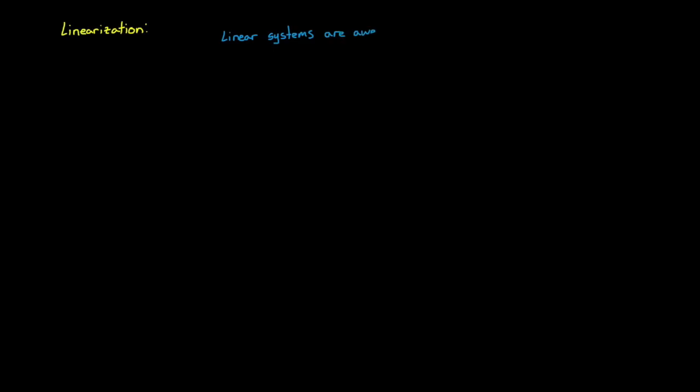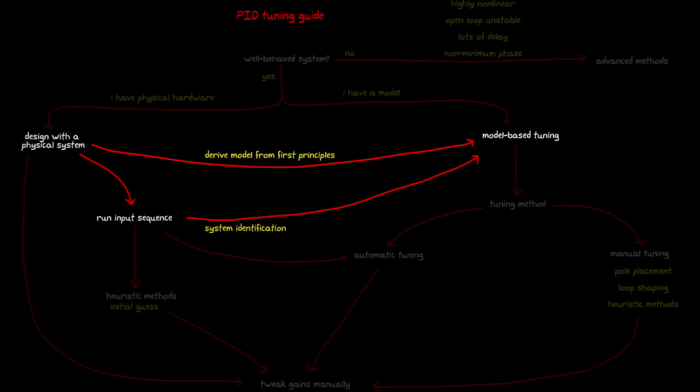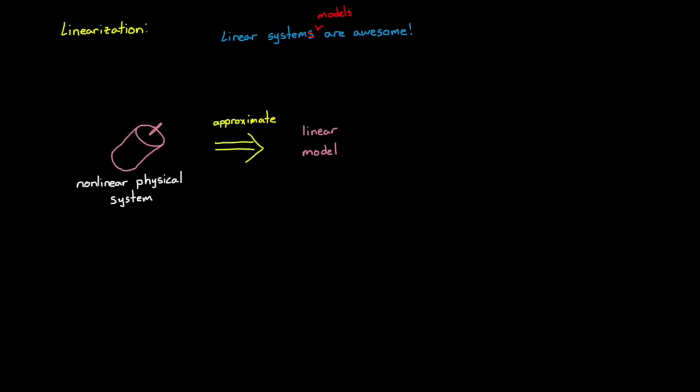Linear systems are awesome. Or more accurately, linear system models are awesome because there is no such thing as a truly linear system. Real systems all have some non-linear behavior to them. But that doesn't stop us from approximating a real system with a linear model. We just did that very thing with system identification, and now we're going to start with an existing non-linear model and make it linear. The hope is that your real system behaves linearly enough that you're okay with this approximation.